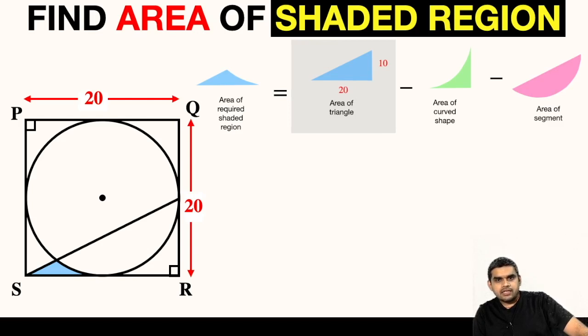We know that area of this right triangle will be half times length of its base times its altitude. So this will be half times 20 times 10 which will give us 100. So the area of this right triangle is 100. Now let us focus on finding area of this curved shape.